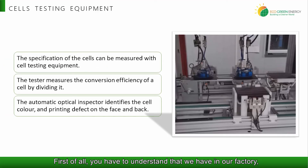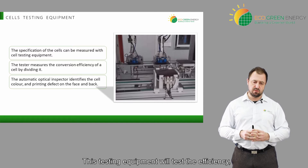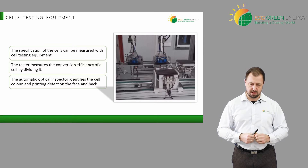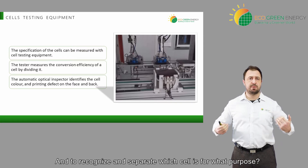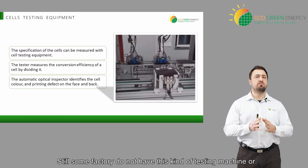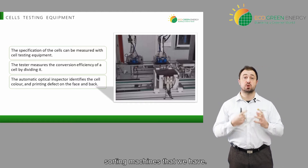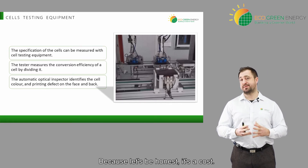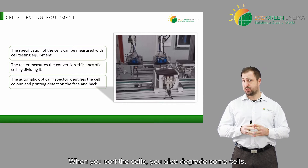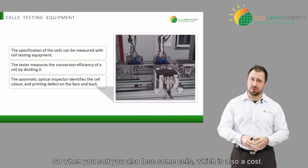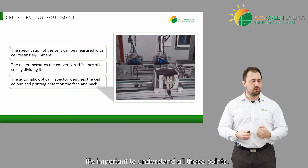Today we want to focus on what is grade A, B, C on cells, and to see how we can explain this well to the client and understand it ourselves. You have to understand that we have in our factory testing equipment for cells. This testing equipment will test the efficiency, the color, and the effect — to recognize and separate which cells are for what purpose. Some factories do not have this kind of sorting machine. Some do have it but do not use it, because it's a cost, and when you sort cells you also lose some cells, which is also a cost.